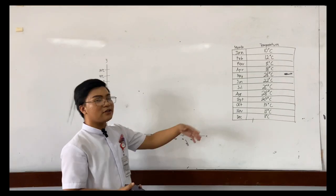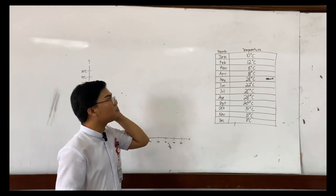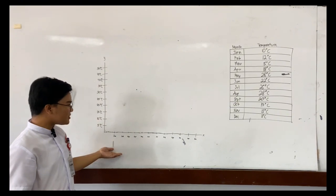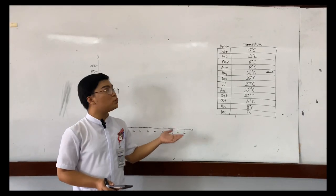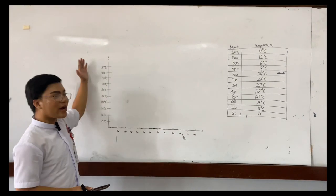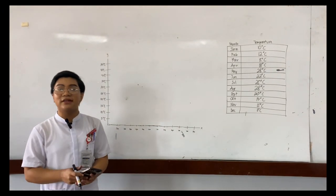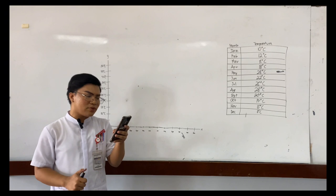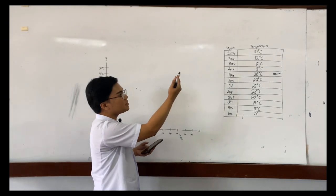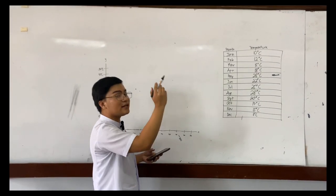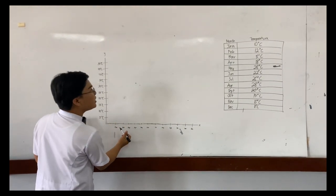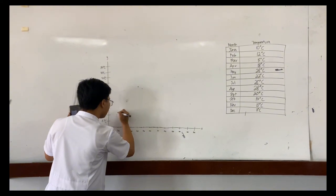As you can see here, I have already plotted the temperatures and the months. This is my data, and these are the axes — the Y-axis and the X-axis. Since we have already collected the data (step one) and chosen our axes (step two), and determined the scale (step three), let us proceed to step four: plot points. In the given data, January is 10 degrees Celsius, so we plot it at January and 10 Celsius. February is 12 degrees Celsius.